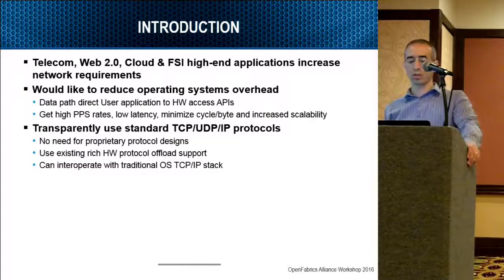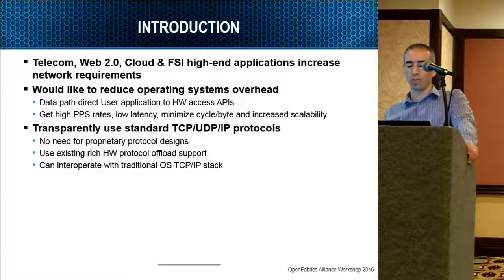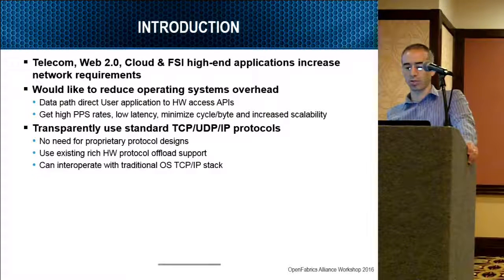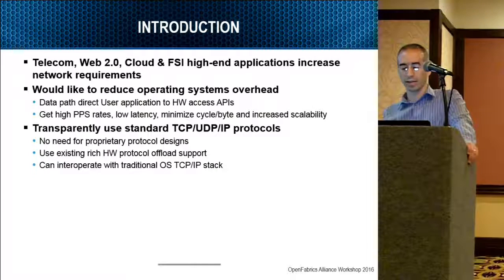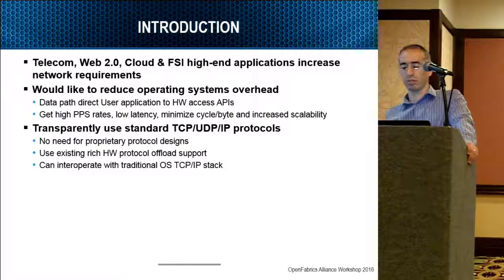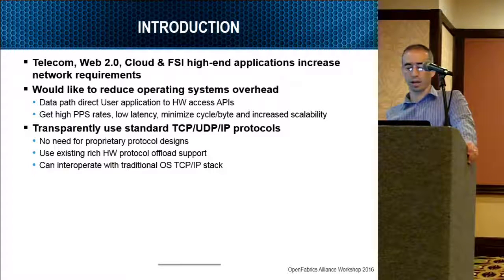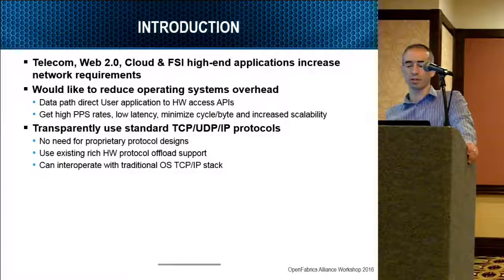A quick introduction: we see that telecom, web 2.0, cloud and FSI customers, the financials and algo trading customers, have increasing network requirements. They would like to get higher packets per second, very low latency, and basically minimize CPU utilization and cycles per byte. It seems like we cannot avoid the fact that the operating system adds a lot of overhead and OS bypass mechanisms are required.